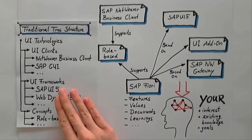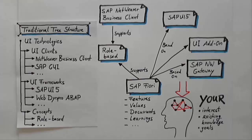Other than in the usual tree structure, where you need to read and understand the whole tree first in order to grasp some of the relationships between topics, the Semantic Network can provide you with this insight immediately, based on your starting point. In the case of the SAP UX Explorer, each topic comes with an 'Explore relation' section that guides you to other related topics for further exploration.